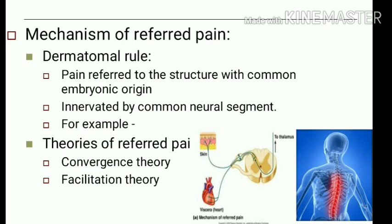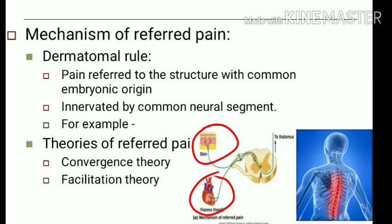The mechanism of referred pain involves the dermatomal rule: pain sensation is referred to structures with a common embryonic origin, and because of that common embryonic origin they are innervated by common neural segments. For example, the nerve supply to the heart and the nerve supply to the left arm and left shoulder both arise from the same spinal segment.